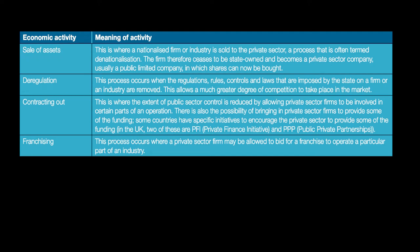A good example in Pakistan is PSO — Pakistan State Oil — which was previously a publicly-owned company but is now a privately-owned company, fully owned by the private sector and listed on the stock exchange. Another form of privatization is deregulation, where the government removes restrictions placed on producers in a market in order to encourage competition. All the regulations, rules, controls, and laws previously imposed by the state on firms are removed so that more competition is allowed. The argument is that if firms are over-regulated, they may become complacent, resulting in X-inefficiency.